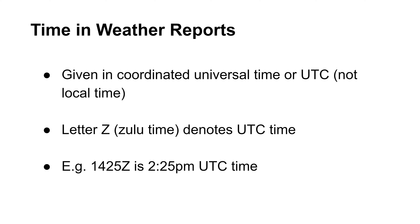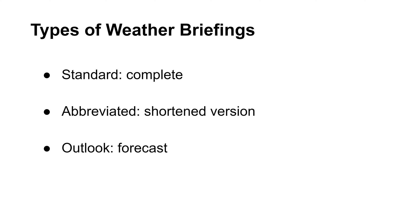Time in TAF and METAR reports is given in Coordinated Universal Time or UTC. The letter Z at the end denotes UTC time or Zulu time. When requesting a weather briefing, you can get a standard briefing for a complete set of weather conditions, an abbreviated briefing when you need only a few specific items, and an outlook when your planned flight departure is more than 6 hours from the report issuance time.